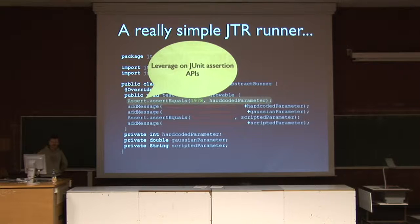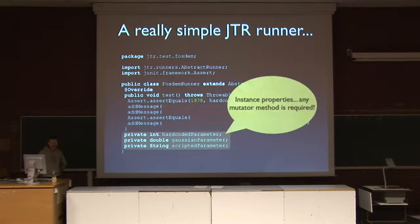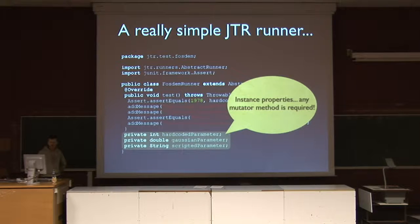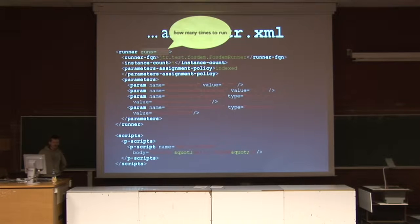It is also possible to check for correctness during test execution leveraging the JUnit assertion API, which is really powerful. We can also provide the end user with proper messages for later inspection. Another interesting thing is that our test input parameters do not require mutator methods, because the JTR framework is able to inject values and resources without any mutator method. This is how we can instruct the JTR runtime on the way our tests should be executed — by means of the JTR configuration file, which is a simple XML configuration file.